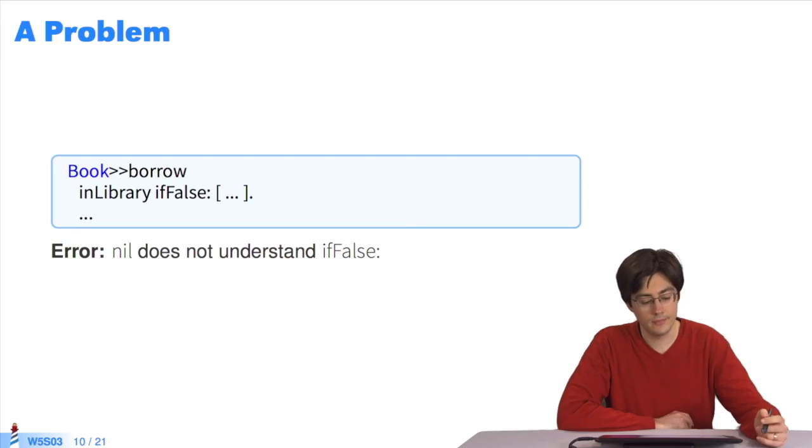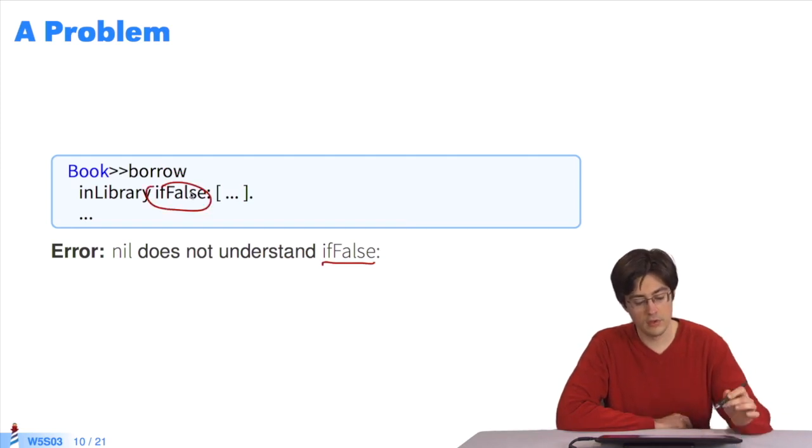Here's another problem. Here, we have a book class in borrow method. When we execute, we get the message that nil does not understand if false. So, we send the message if false here to nil. What does that mean? It means that in library has the value nil, which has the default value of all the variables, we can say that probably in library has never been initialized. We have to put a default value in that variable.